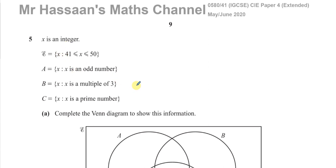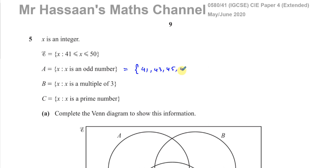Set A is such that x is an odd number, but it must be within the universal set. So listing all the elements of A: the odd integers are 41, 43, 45, 47, and 49 — all the ones not divisible by 2 within our universal set.